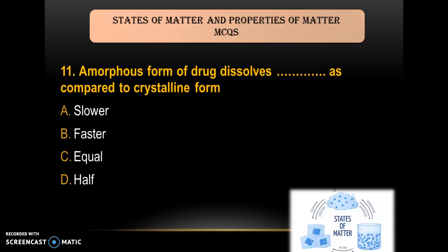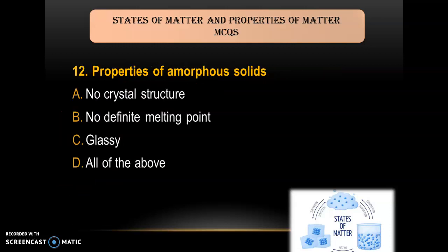Question 11: The amorphous form of a drug dissolves ___ as compared to the crystalline form — A) slower; B) faster; C) equal; D) half. As we all know, if you convert the crystalline form into the amorphous form, the dissolution process is much faster. So the answer is B — faster.